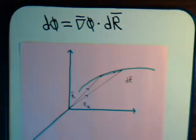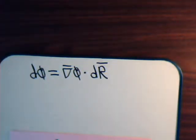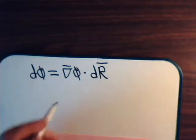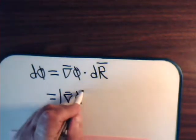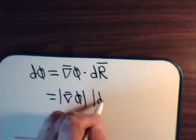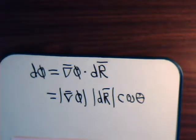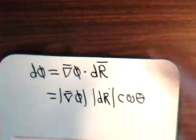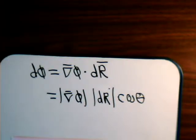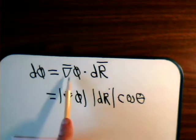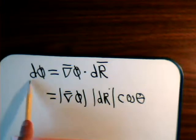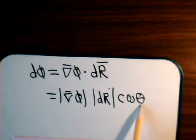What we explained in our introductory video on the del operator and the gradient was that this dot product tells us that the change in the scalar is equal to the magnitude of its gradient vector times the cosine of the angle between them. The cosine of zero is one; otherwise, it's a fraction. So when there is no angle between the gradient and the displacement vector — meaning the displacement vector is pointing in the same direction as the gradient — this has its greatest value, because the cosine of theta is one when theta equals zero.